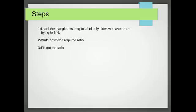We then fill out the ratio with the angle, the side, and the unknown. We then multiply by the denominator, and then we calculate the value of x.